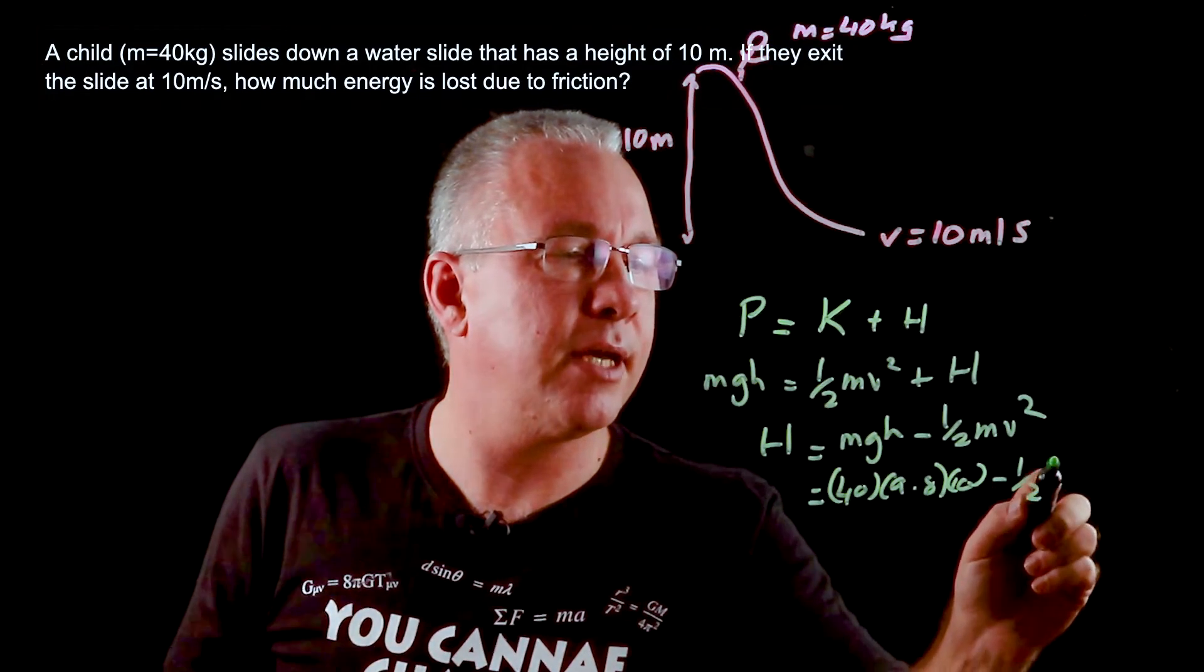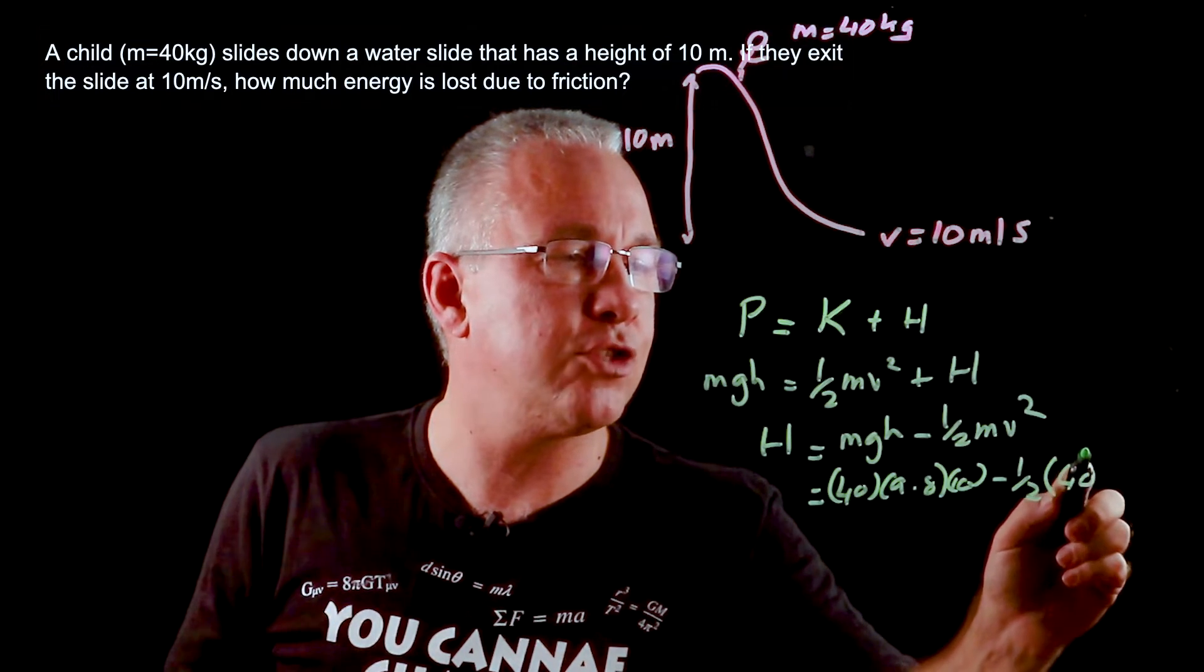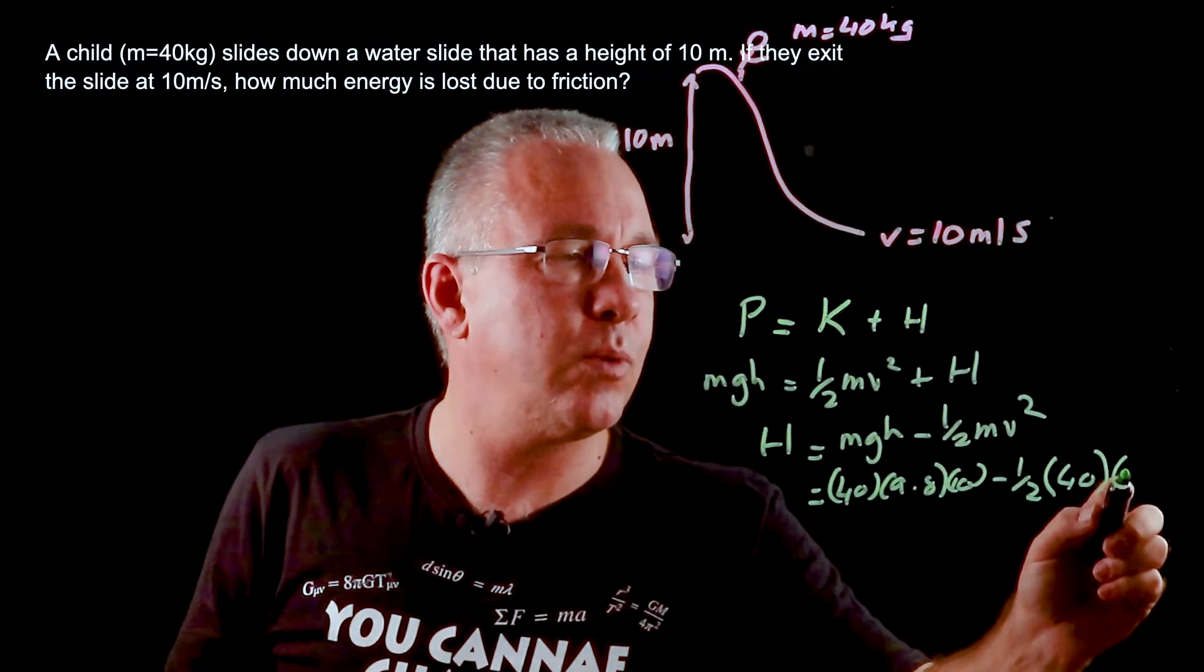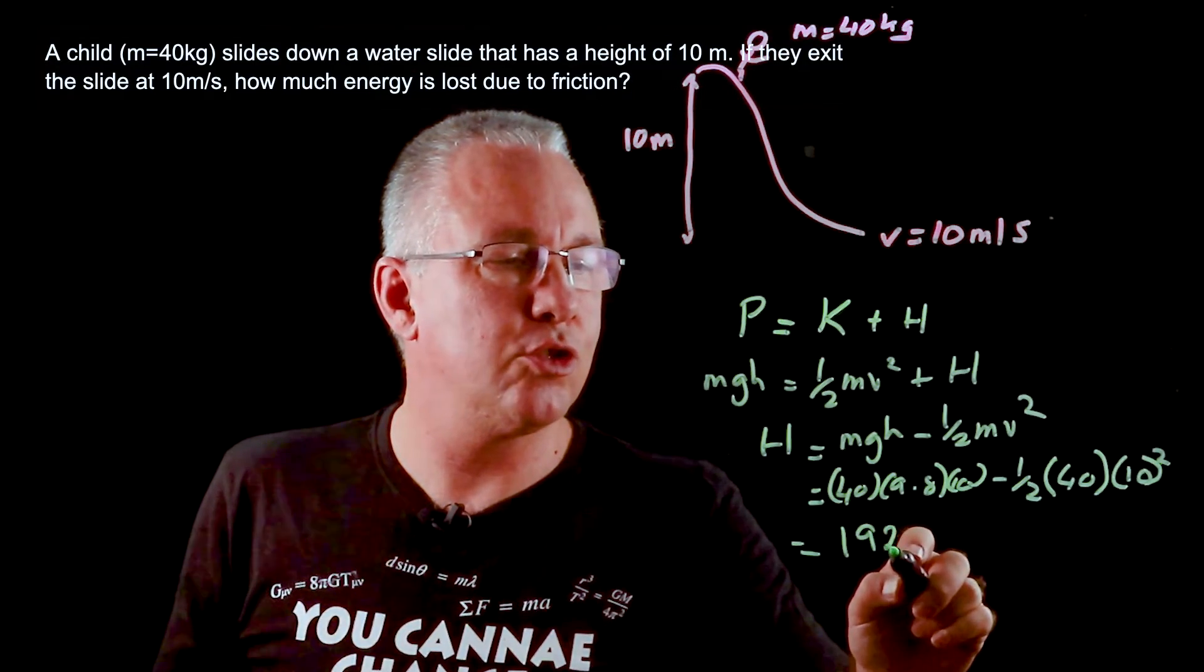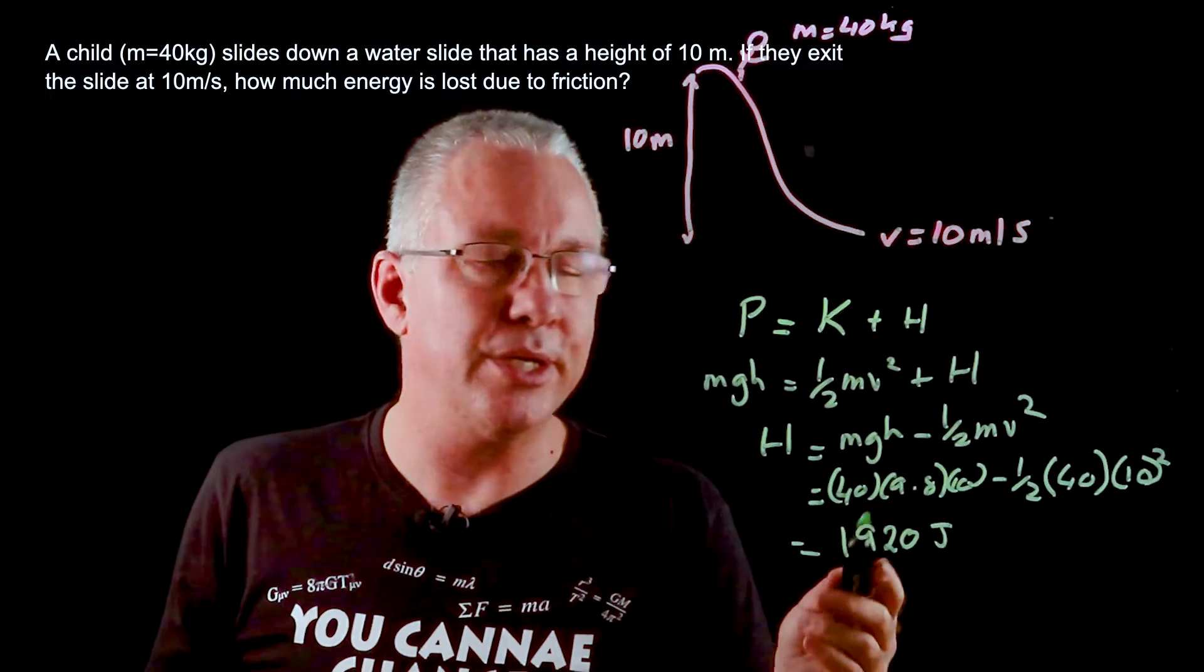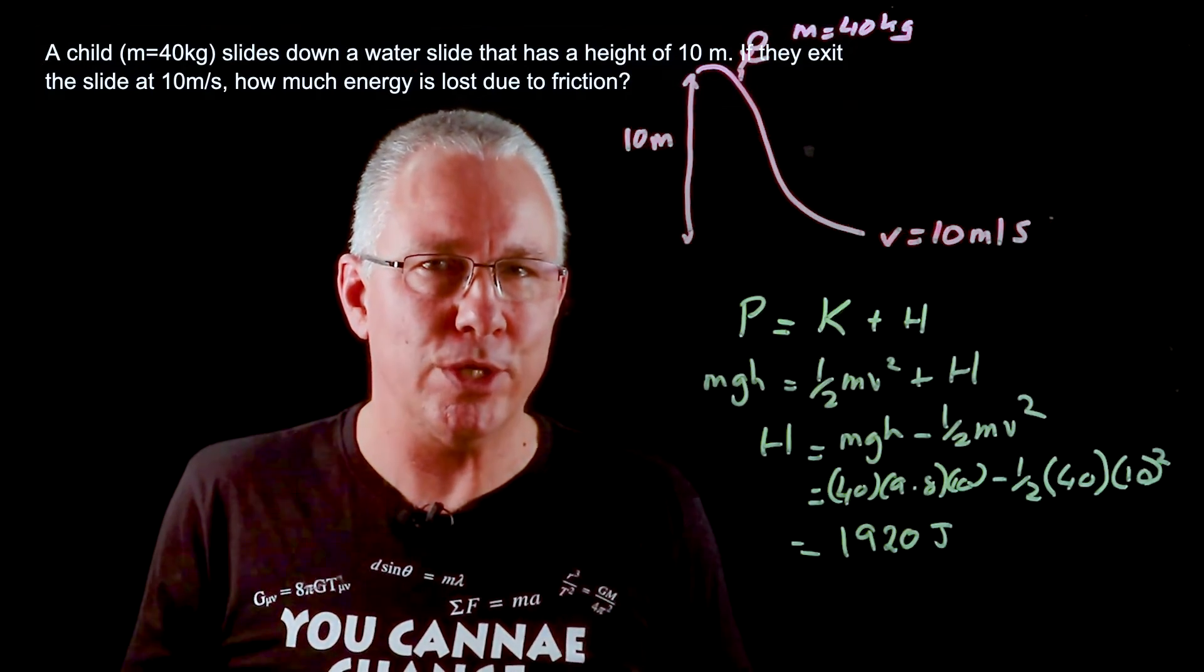Subtract a half again, multiply this by the mass of the child and multiply by v squared which is 10 squared. And when you calculate that out you're going to get 1920 joules or 1.92 kilojoules if you wish.